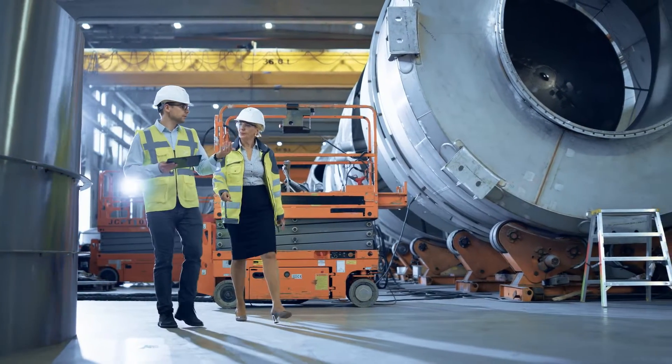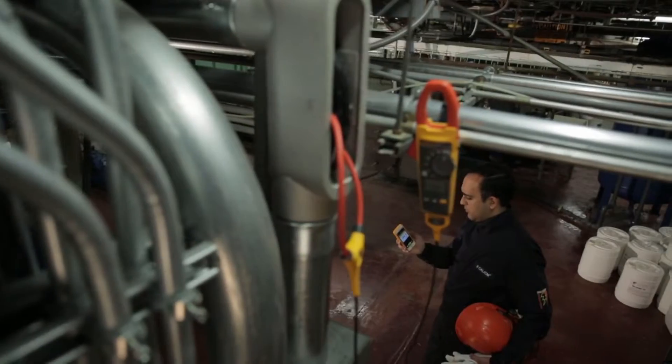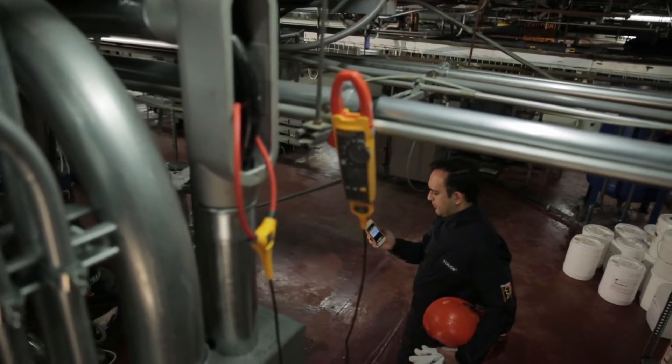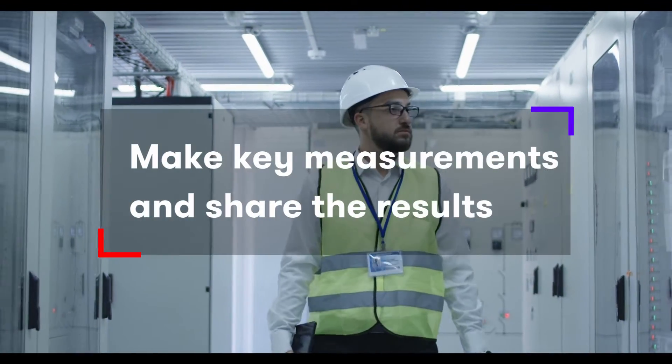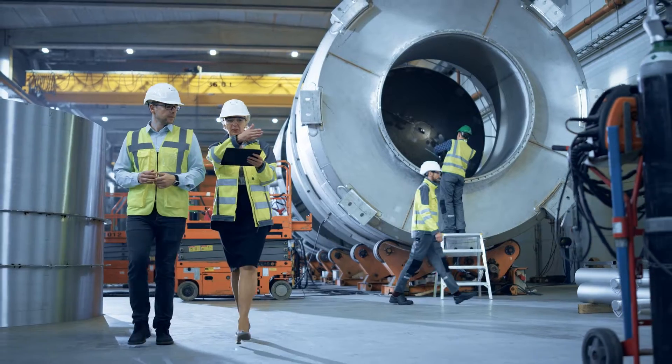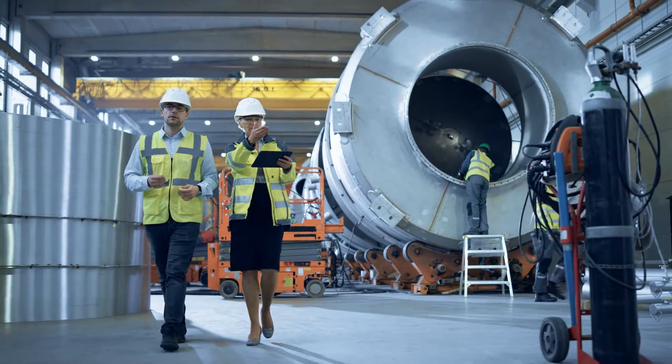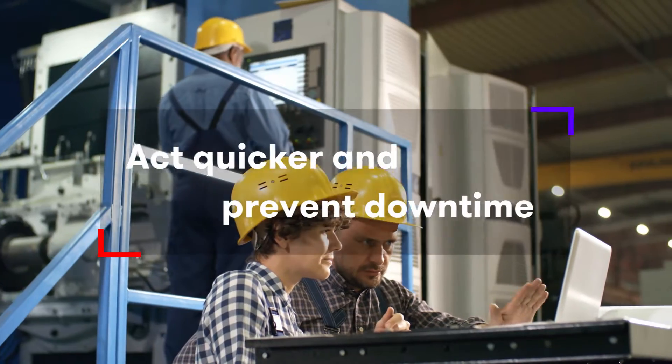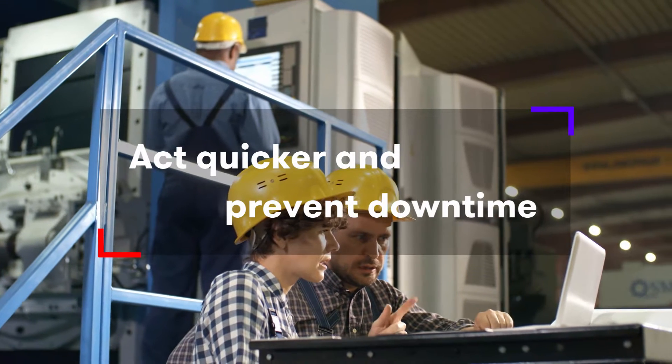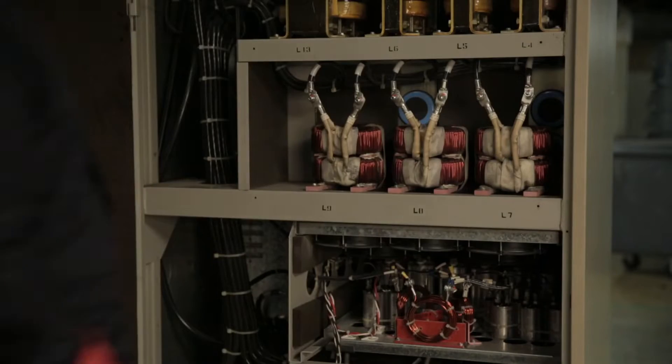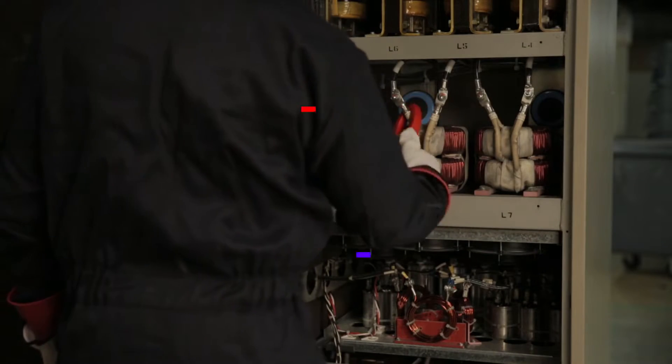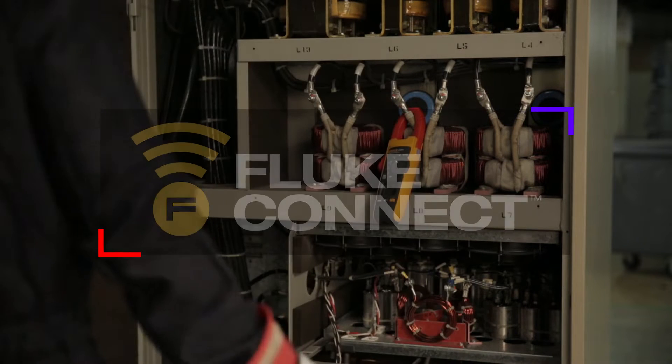Connected test and measurement is equipment that can temporarily or permanently capture information on how a process, piece of equipment, building or individual part is performing. This information can then be shared either locally or via the cloud. This allows for better insight and improved, faster decision making in terms of plant maintenance and process improvement.